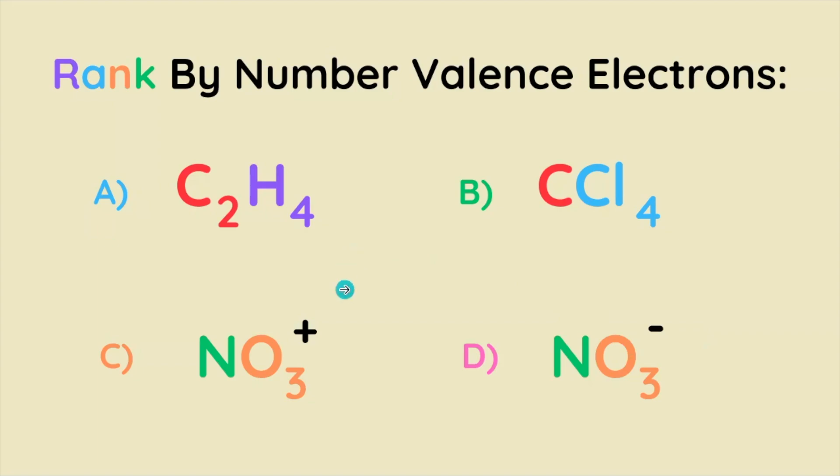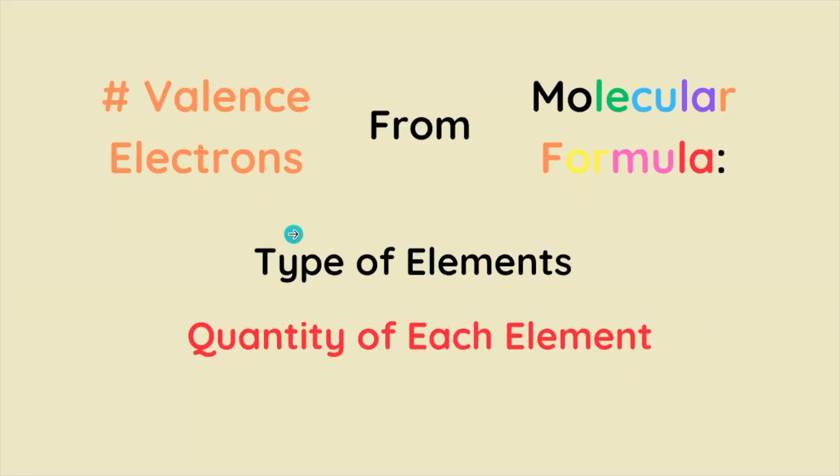Rank each of these molecules by the number of valence electrons each one has. You must be able to do this because it's almost always the first step in correctly constructing Lewis structures. So what we gotta do is go from the molecular formula of the molecule to figure out how many valence electrons we have. And that will depend upon the elements that compose it and the number of each.